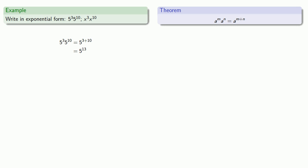And it's important to remember that nothing important changes if, instead of 5, we write x. x to power 3 times x to power 10 is the same as x to power 13.